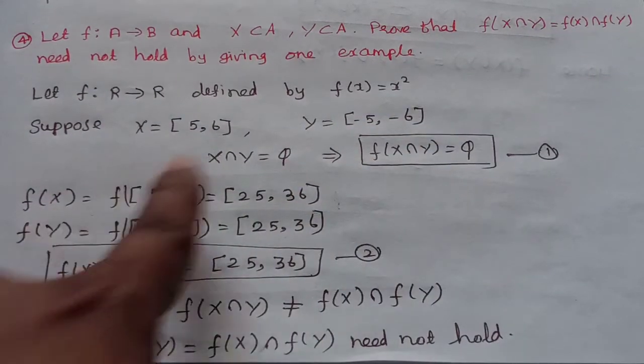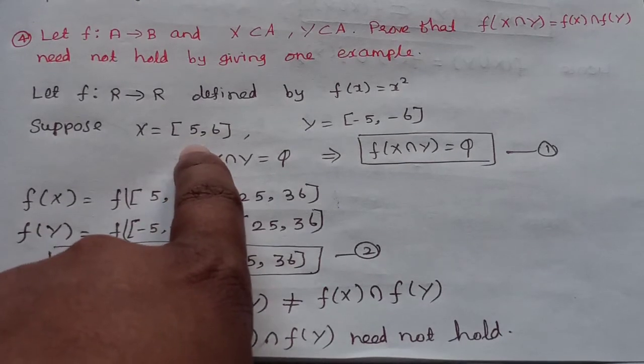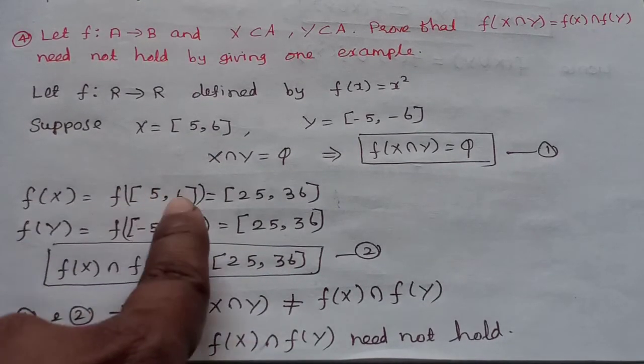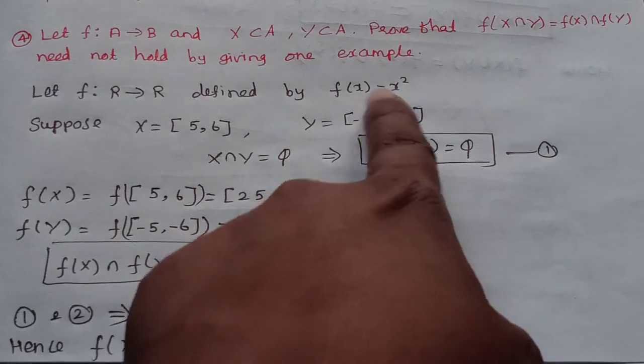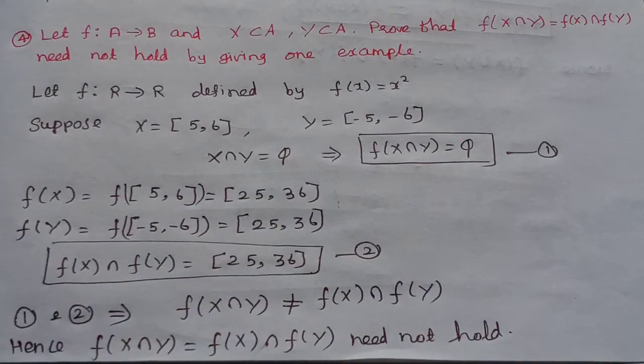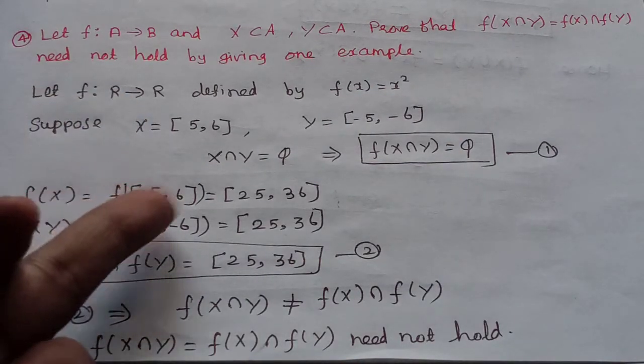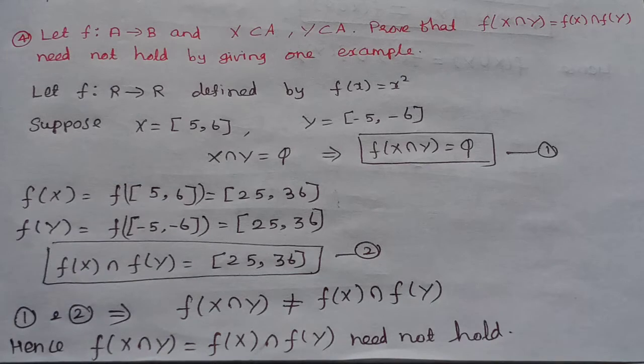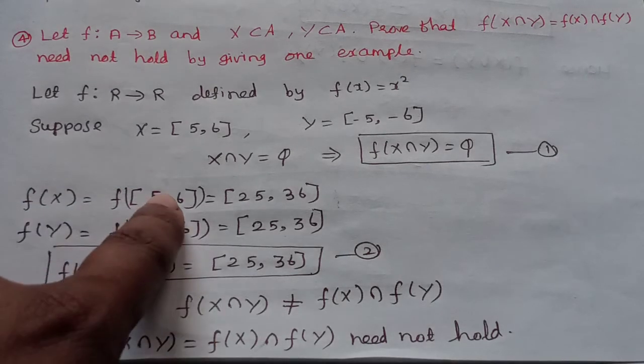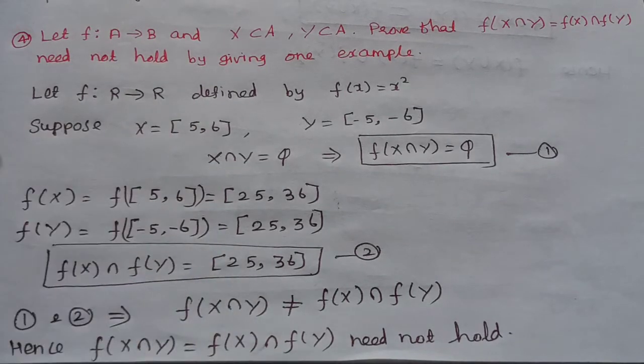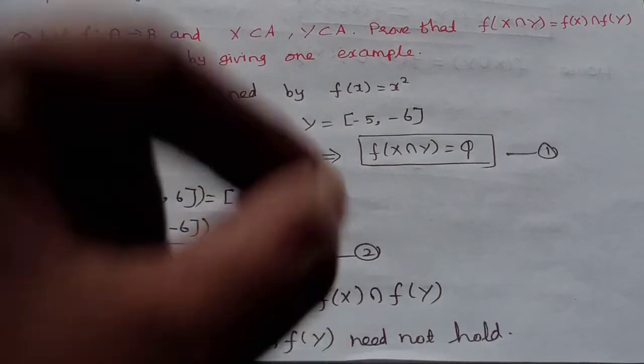Now, we will find f(X) for the closed interval [5,6]. By applying the definition f(x) = x², what is the answer for f([5,6])? 5² = 25, 6² = 36. In between, the squares are also between 25 and 36.